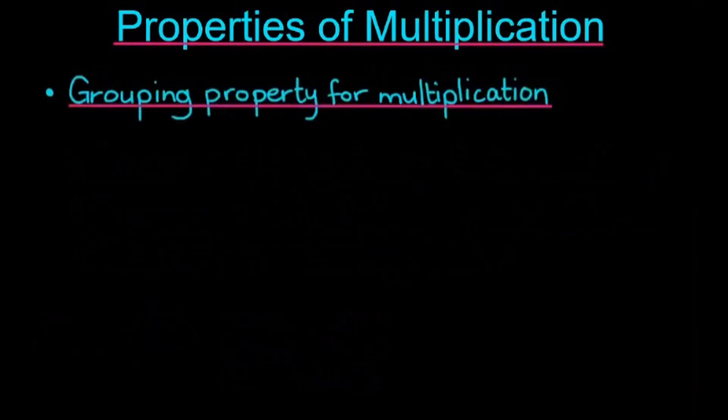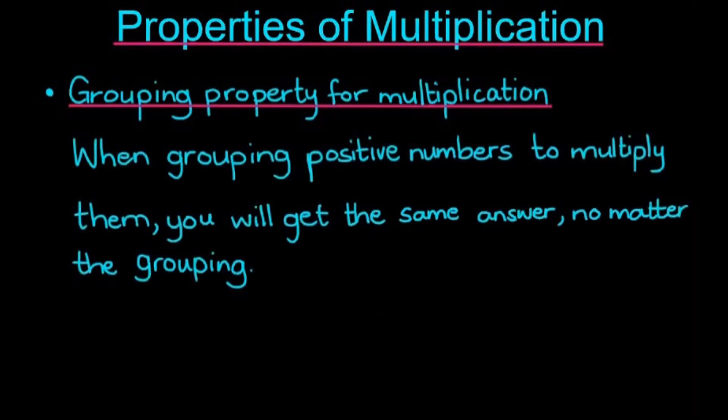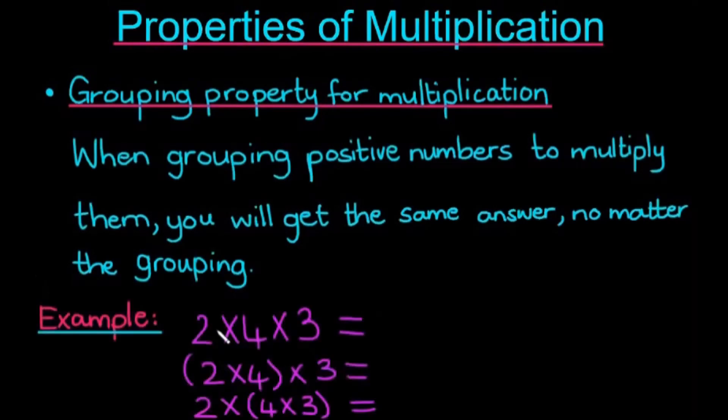The grouping property for multiplication states that when grouping positive numbers to multiply them, you get the same answer no matter the grouping. So here I have 2 times 4 times 3, all of which will give me an answer of 24. Then I have in brackets here, 2 times 4, which will give me 8 times 3, which will also give me 24. And at the bottom over here, I have 2 times 4 times 3, which will also give me 24.